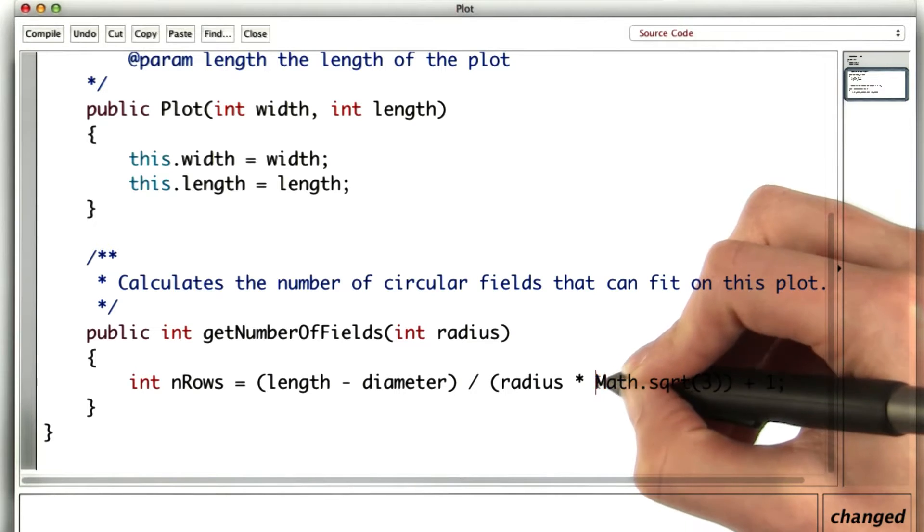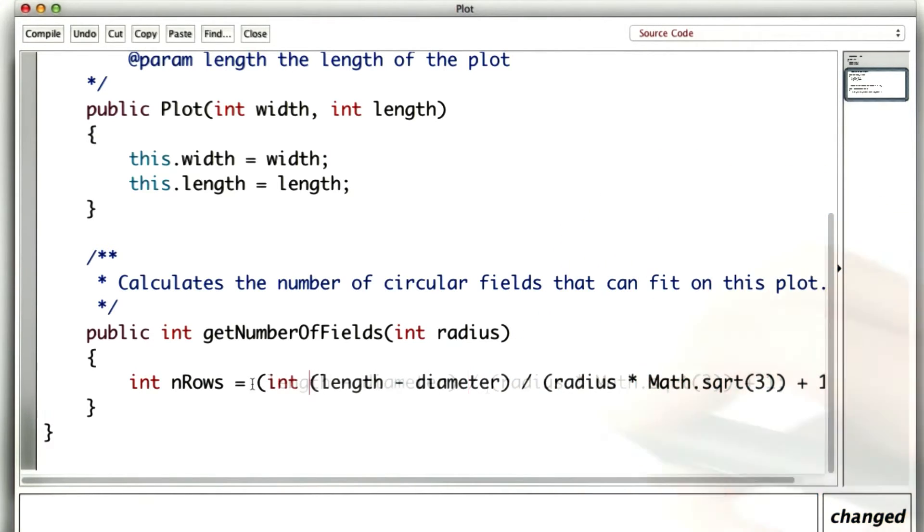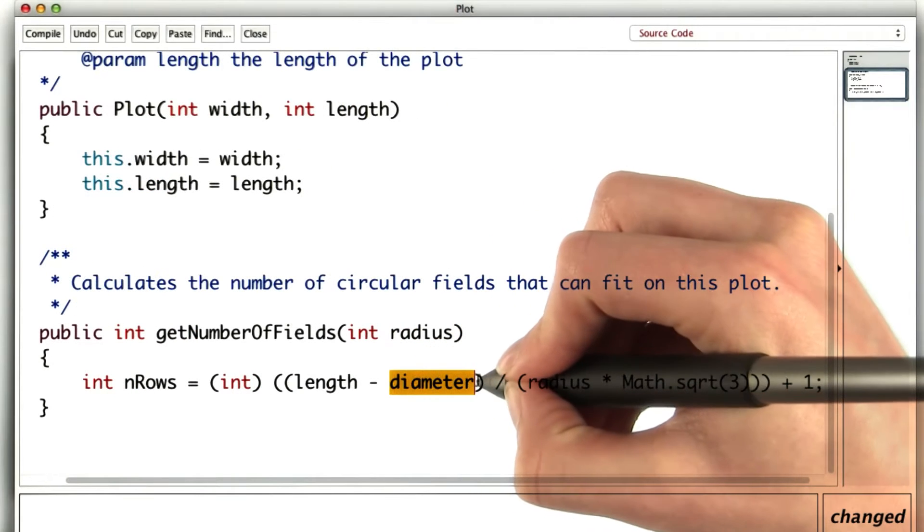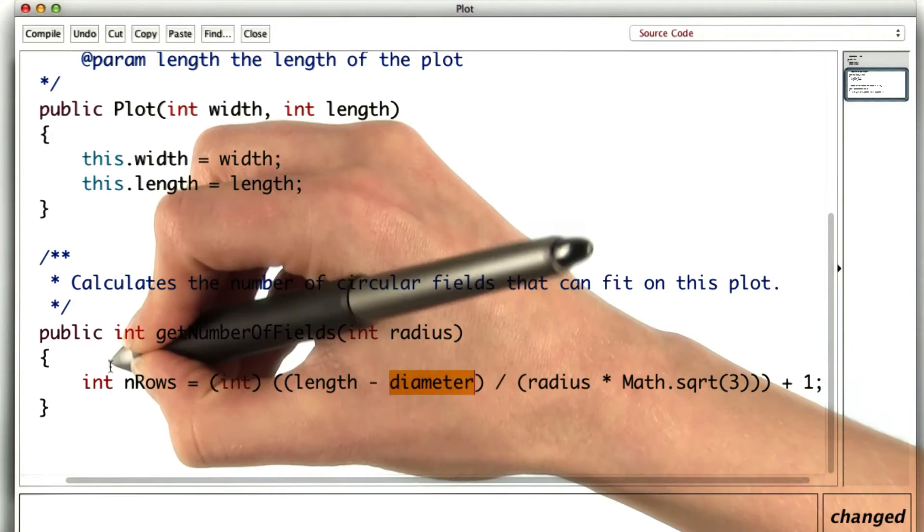And since there are some doubles in here, I won't automatically get integer division. So to drop the fractional part, I'll need to actually cast this. Now I haven't actually defined diameter, but that's just twice the radius.